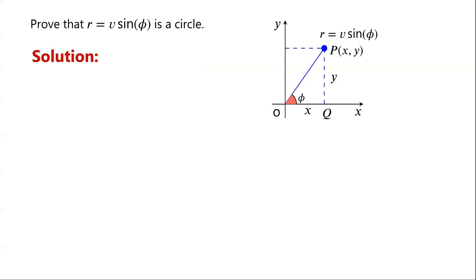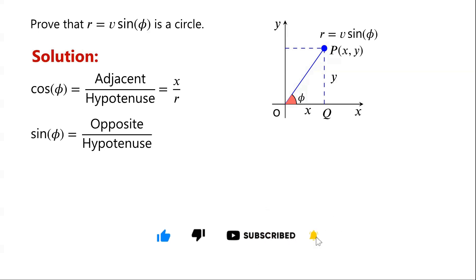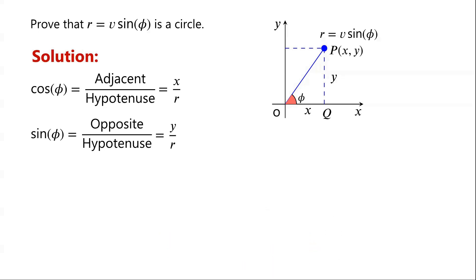Cosine φ equals adjacent over hypotenuse, which is equal to x over r. And sine φ equals opposite over hypotenuse, which is equal to y over r. So x equals r·cos(φ), and y equals r·sin(φ).